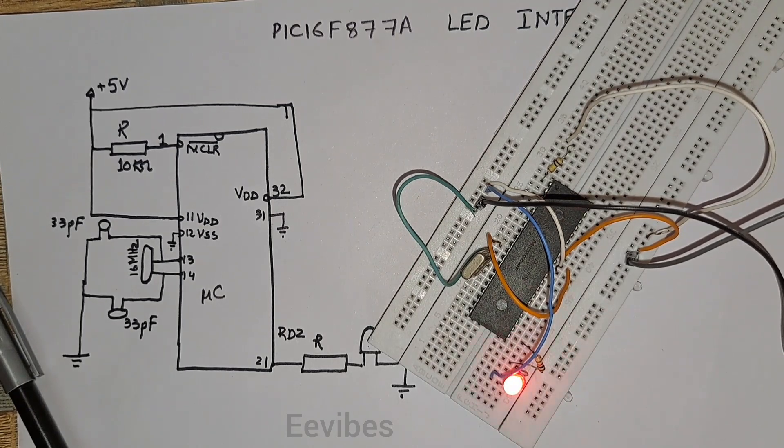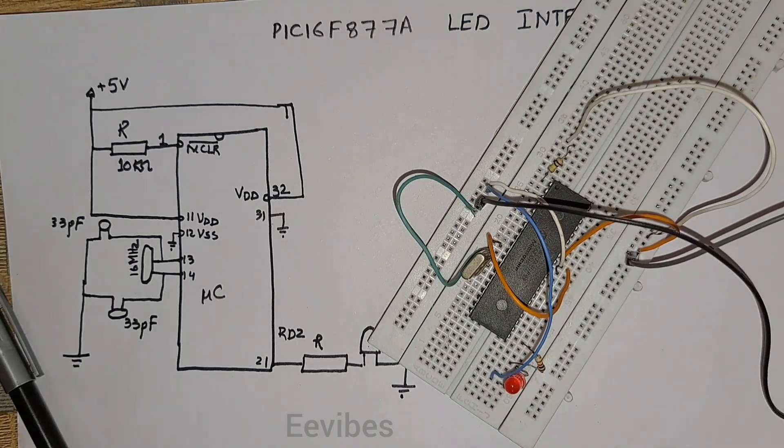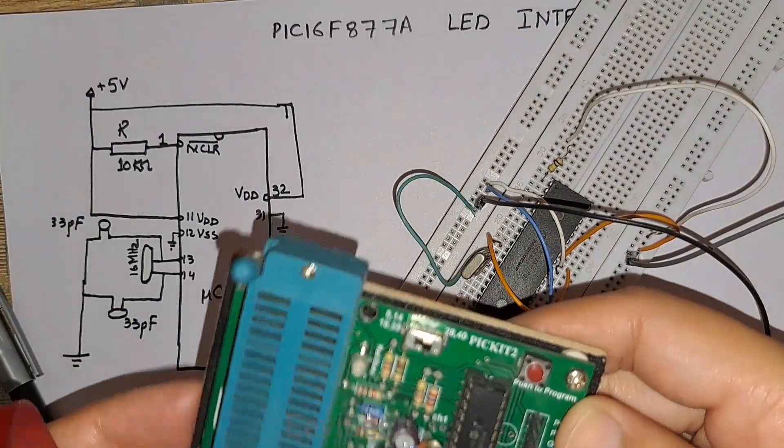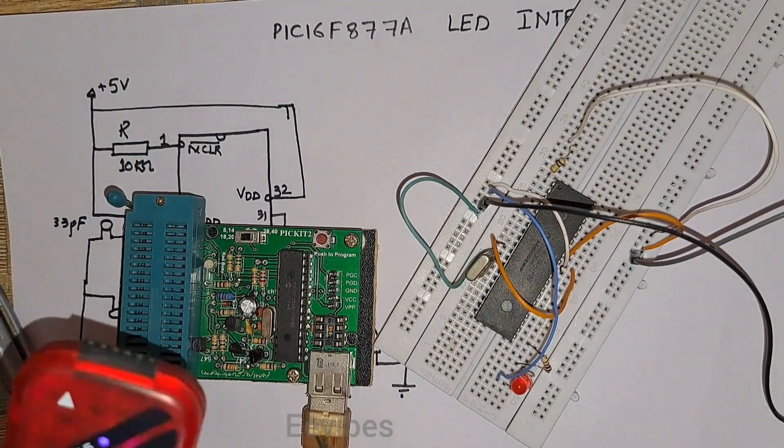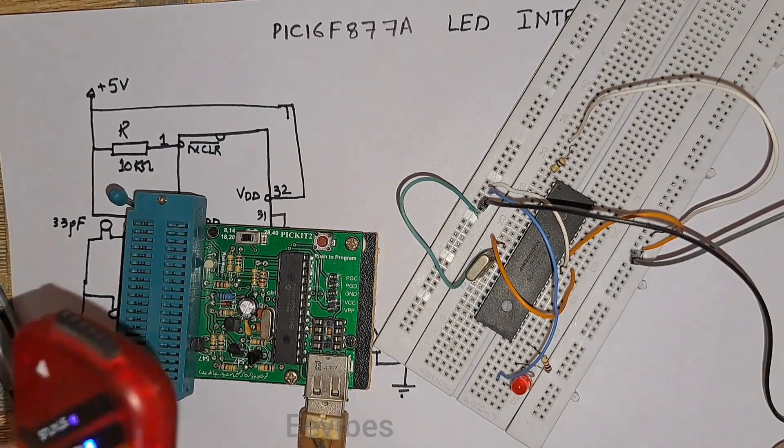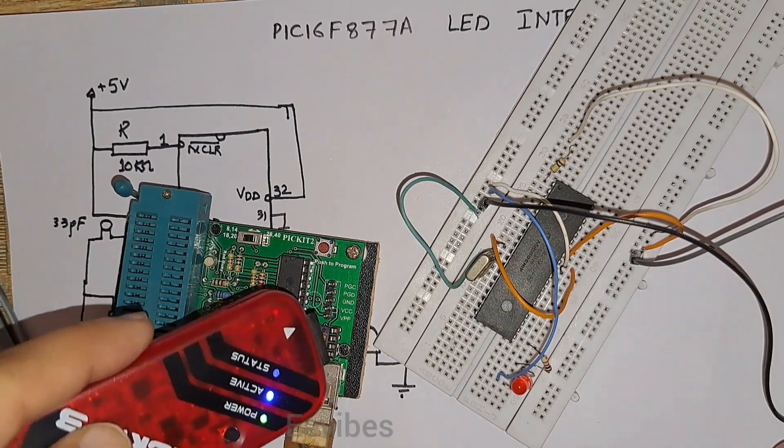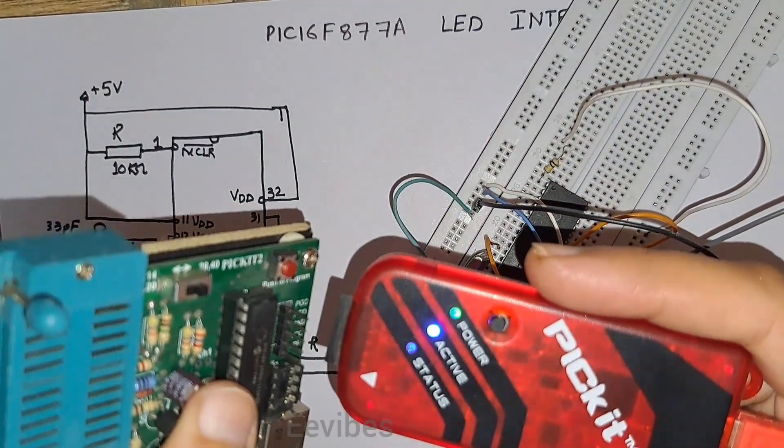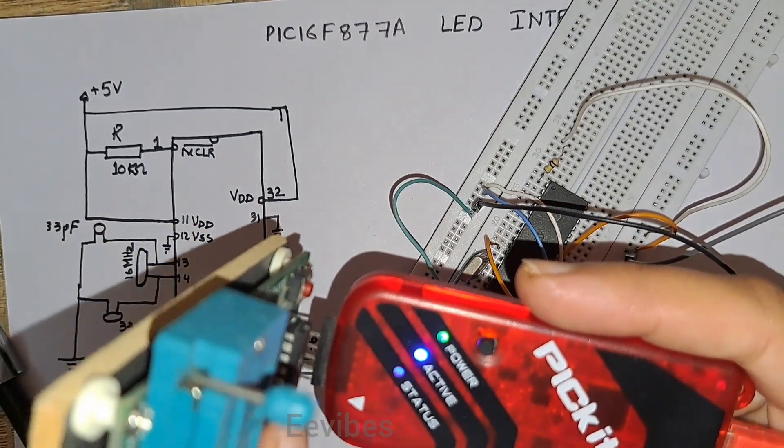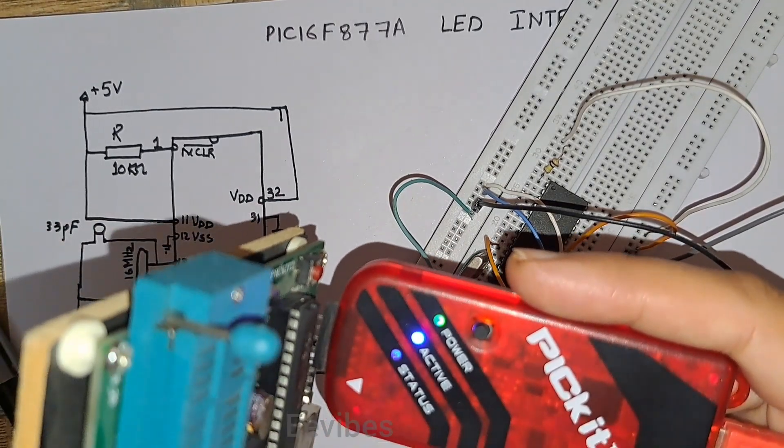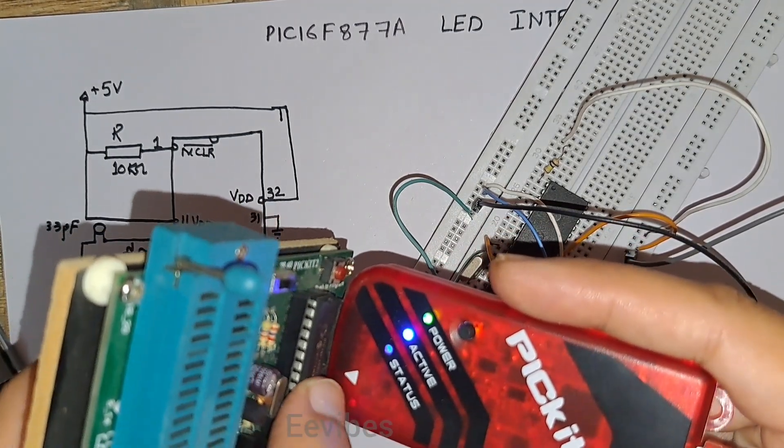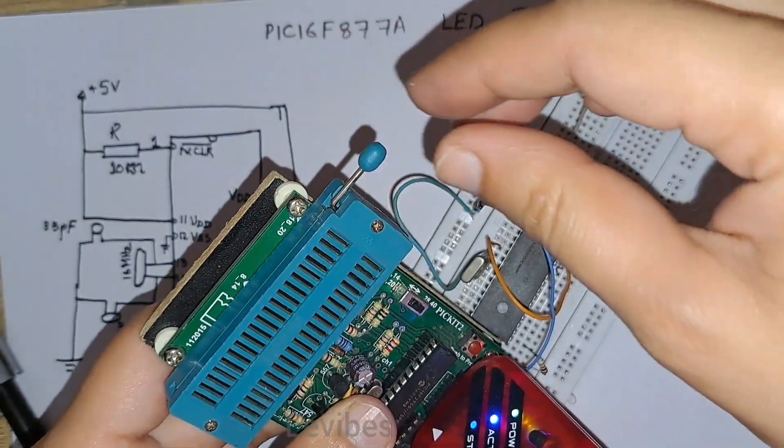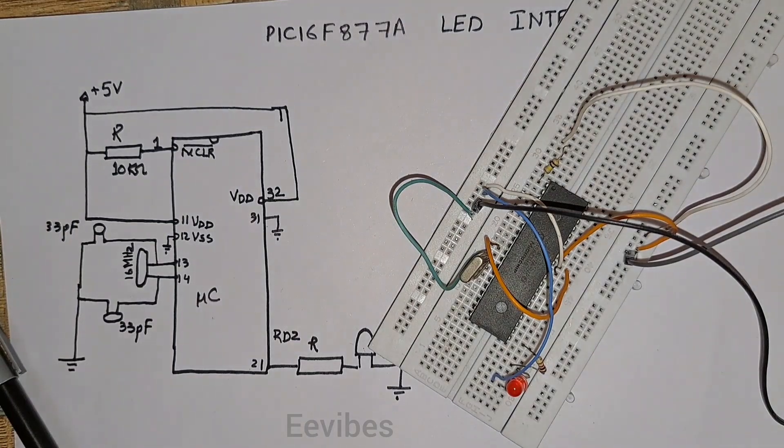One thing more, right now I have used another burner that is basically used for importing the code into the PIC microcontroller. This is the PIC Kit 3 programmer or debugger, and you can interface it by keeping in mind that the first or this arrow head should be connected with the MCLR pin. Then you can place the microcontroller on it, lock it, and then you can import the code into the PIC microcontroller.